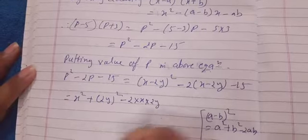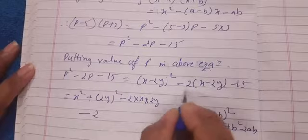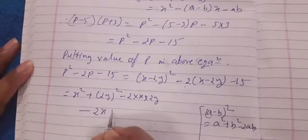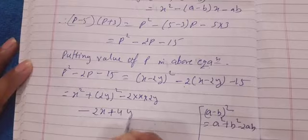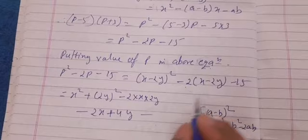Minus this number will open the brackets, so -2 × x is -2x, -2 × -2y is +4y, and this is -15.